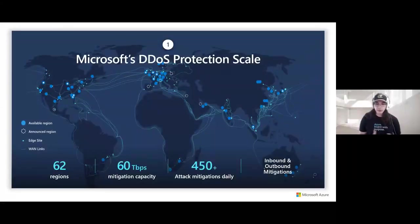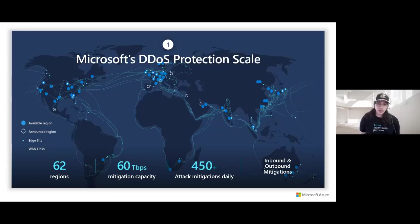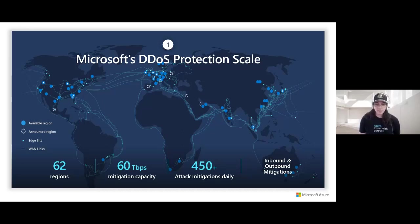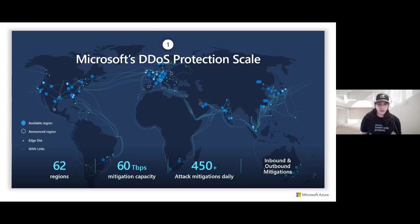Azure DDoS protection standard protects resources at a global scale, covering 62 regions with mitigation capacity of up to 60 terabits per second, allowing us to mitigate large attacks by absorbing and scrubbing them using the global network automatically. We typically mitigate around 450+ attacks daily. We have measures protecting against not only inbound attacks but also attacks sourced from within an Azure tenant. During mitigation, traffic is redirected and checked for malformed packets, potential spoofing using SYN cookies, forced retransmission of TCP SYNs, and rate limiting if no other enforcement can be performed.